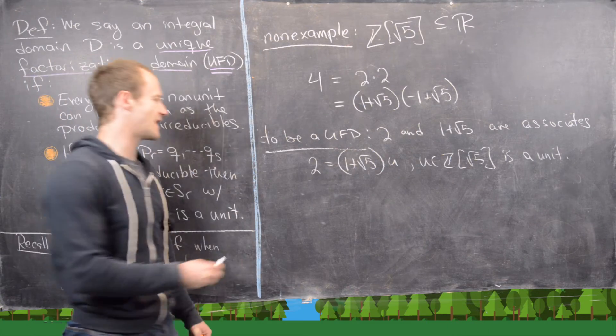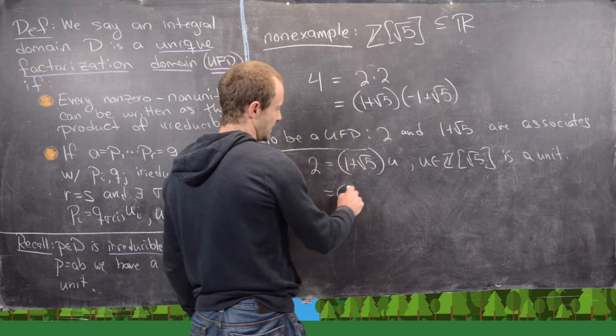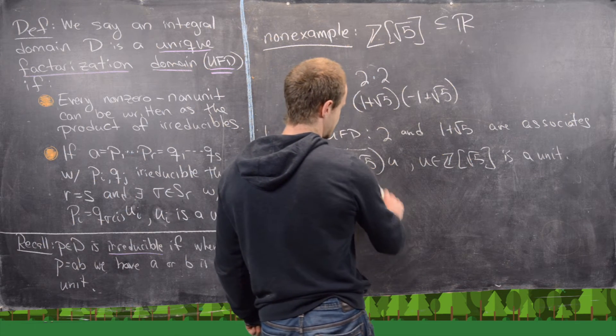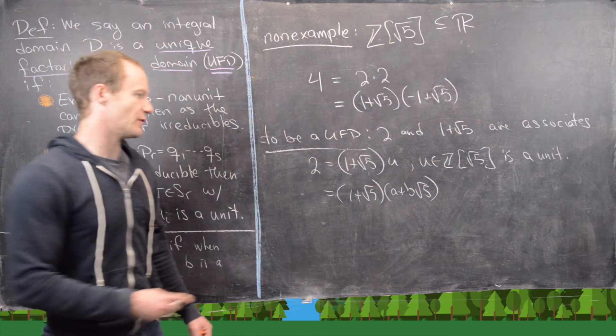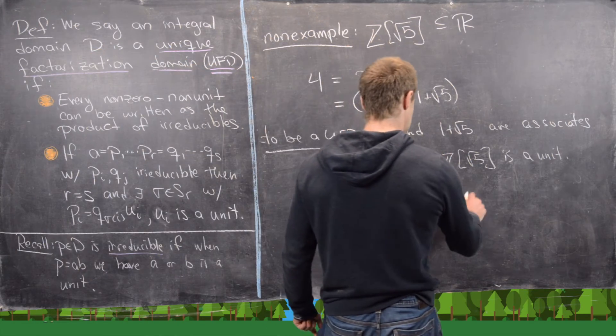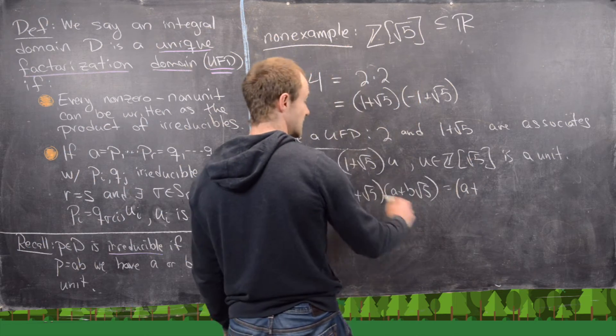But now let's go ahead and see why that doesn't work. So that means we would be able to write 1 plus root 5 times A plus B root 5 and get 2. But let's see what we get when we foil this out. That's going to give us A plus 5B.